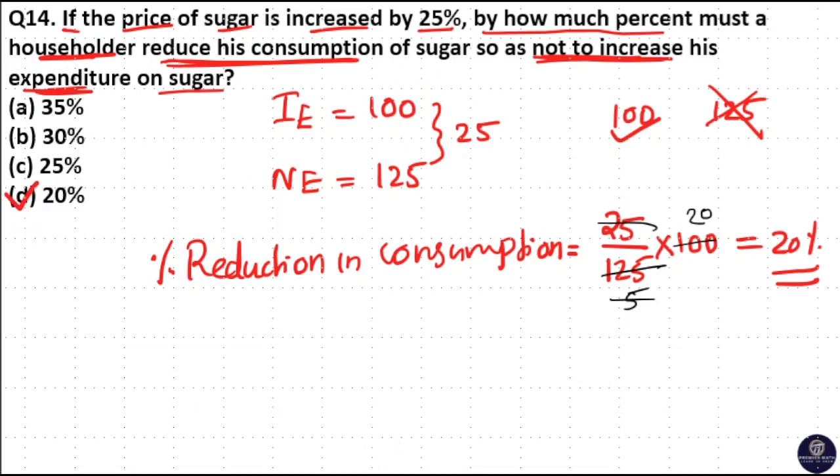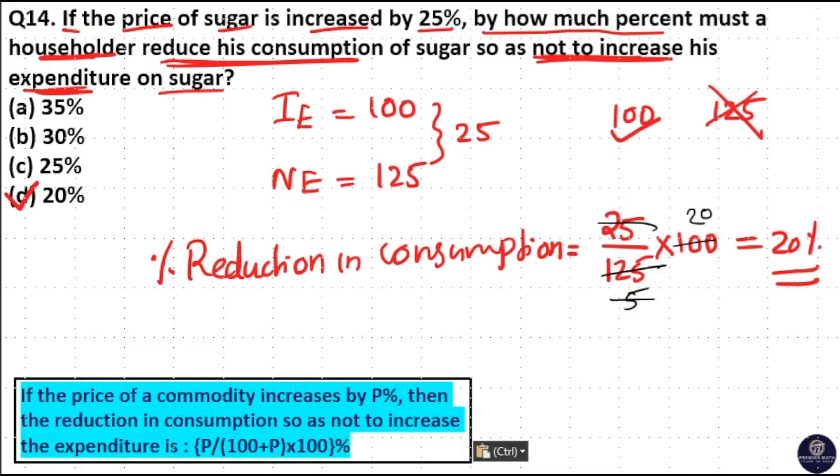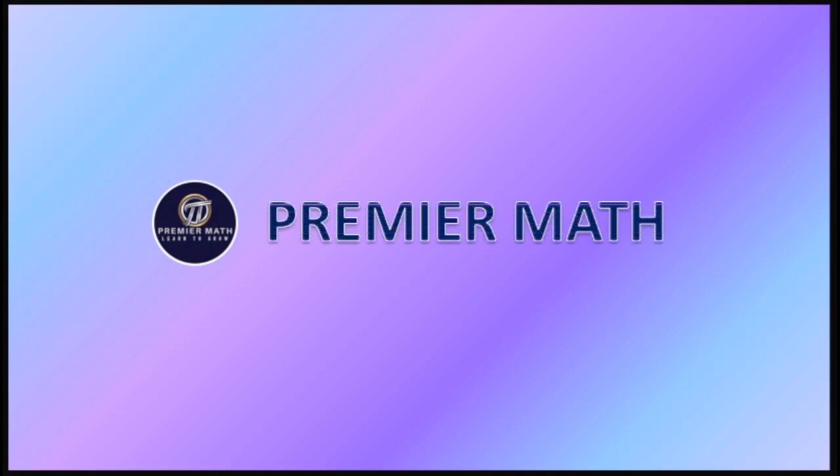If you have doubt, use this formula: P divided by (100 plus P) times 100.